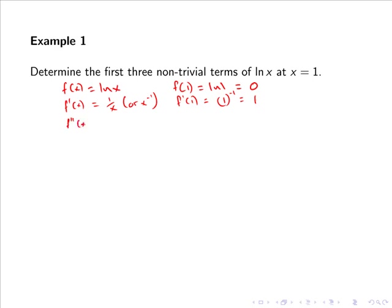The second derivative equals minus x to the power of minus 2, and this evaluated at 1 gives us minus 1 to the power of minus 2, so minus 1.